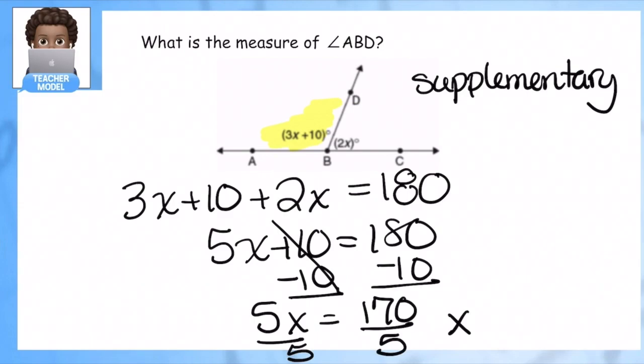This tells me that x is equal to 34. Now that I know what x equals, does that mean the angle is equal to 34? No, not at all. It just tells me what x equals, so now I'm going to substitute.